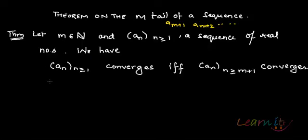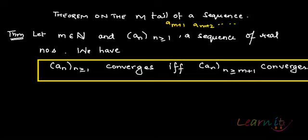Now, if m is some natural number and you have a sequence of real numbers a_n, then we have the fact that a_n converges if and only if a_n where n is greater than or equal to m+1 converges. We are trying to say that if you eliminate a finite number of terms from a sequence, it does not change its convergence behavior.